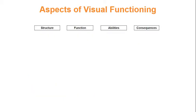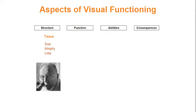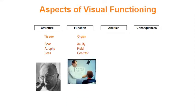When we talk about vision and visual functioning, I have found it useful to consider four main aspects. First, we may consider various changes at the tissue level such as scarring, atrophy or loss. Here we need a pathologist to look at the structure of the organ. However, the structural changes do not tell us how well the eye actually functions. We need to broaden our view to include functional changes — we need a clinician to measure aspects such as visual acuity, visual field and contrast sensitivity.